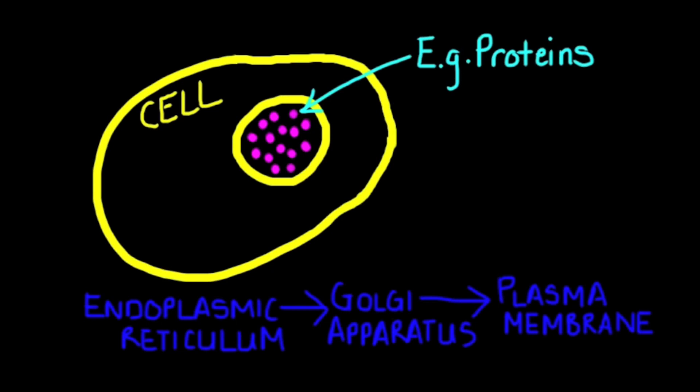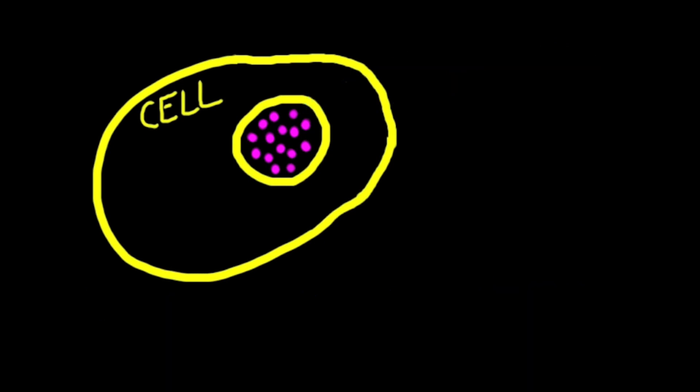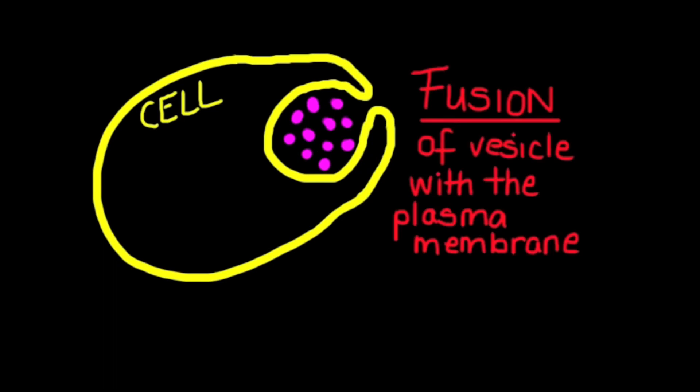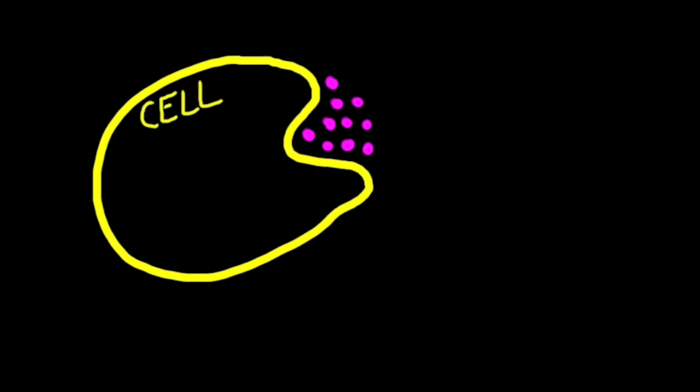In exocytosis, materials are transported through the cell from the rough endoplasmic reticulum to the Golgi apparatus and finally towards the plasma membrane. The vesicle fuses with the plasma membrane, thus secreting the contents of the vesicle.